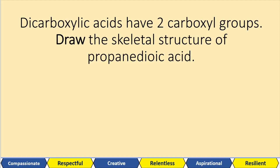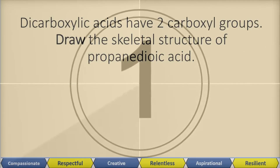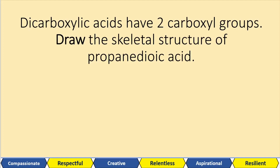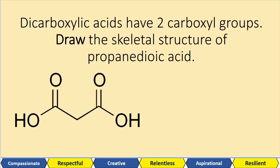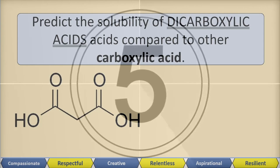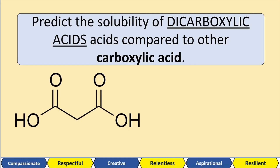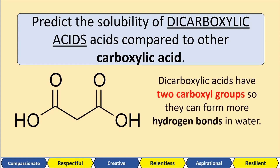Dicarboxylic acids have two carboxyl groups. Draw the skeletal structure of propanedioic acid — we need three carbons with a carboxyl group on both ends, and as a skeletal structure it should look like this. Now predict the solubility of dicarboxylic acids compared to regular carboxylic acids. If one carboxylic group could form hydrogen bonds, having two means you can form a lot more hydrogen bonds. So dicarboxylic acids are obviously more soluble than regular carboxylic acids.